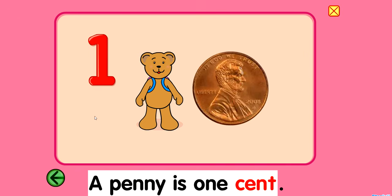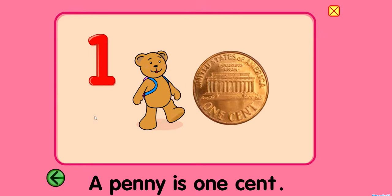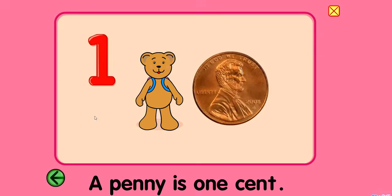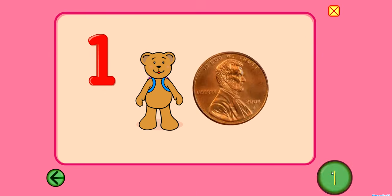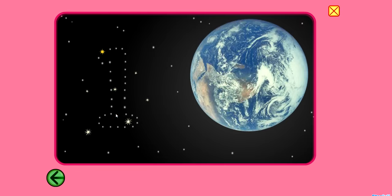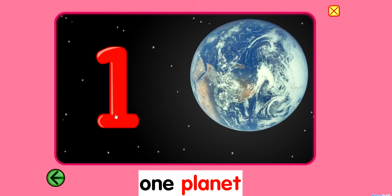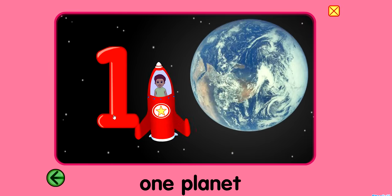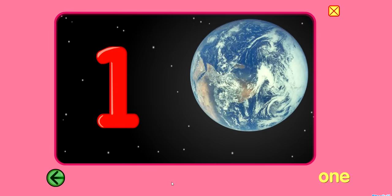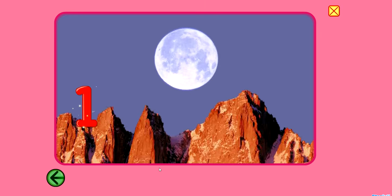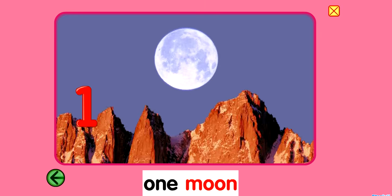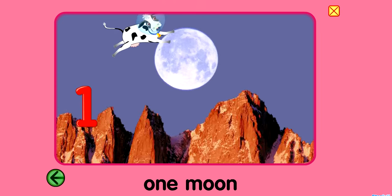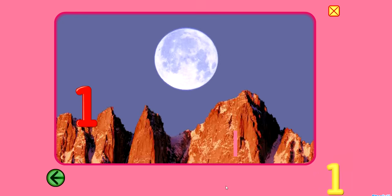A penny is one cent. Tails. Heads. One. One. One planet. That's Earth. One. One. One moon. The cow jumped over the moon. One. Goodbye.